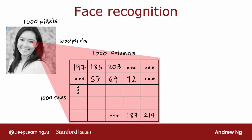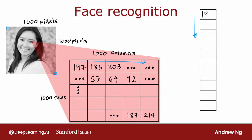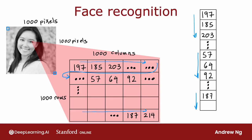185 is the brightness of the pixel one pixel over, and so on, down to 214 for the lower right corner of this image. If you were to take these pixel intensity values and unroll them into a vector, you end up with a list or a vector of a million pixel intensity values — one million because 1,000 by 1,000 gives you a million numbers. So the face recognition problem is: can you train a neural network that takes as input a feature vector with a million pixel brightness values and outputs the identity of the person in the picture?